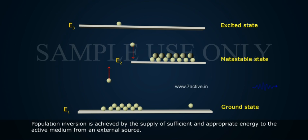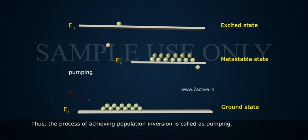Population inversion is achieved by the supply of sufficient and appropriate energy to the active medium from an external source. Thus, the process of achieving population inversion is called as pumping.